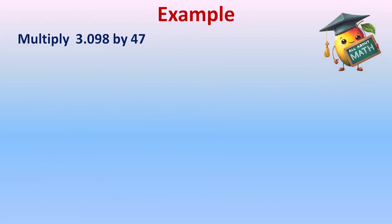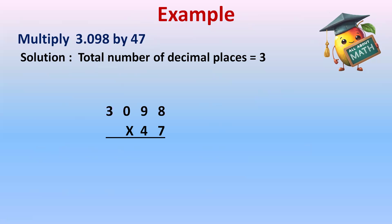Let's see an example. Multiply 3.098 by 47. For that, let's check the number of decimal places first. The total number of decimal places in this case is 1, 2, 3. After decimal, we have 3 places. So the total number of decimal places are 3. Now multiply this number with 47 without decimal. So 3098 multiplied by 47.